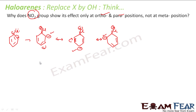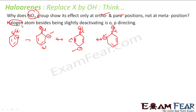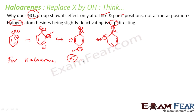So what we see is that the halogen atom deactivates the ring, but it is ortho and para directing. With the halogen atom, the electron density is more at the ortho and para positions. So for halo arenes, electron density is more at ortho and para position.